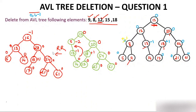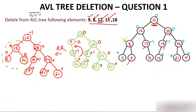After deleting 3 nodes (9, 8, 12), now delete 15. Node 15 is a node having two children. The predecessor is the largest in its left subtree (which is 14), and the successor is the smallest in the right subtree (which is 17). We replace 15 with its predecessor 14. Node 14 comes to the root position and is removed from its old place. After recalculating balance factors, the overall tree remains balanced.